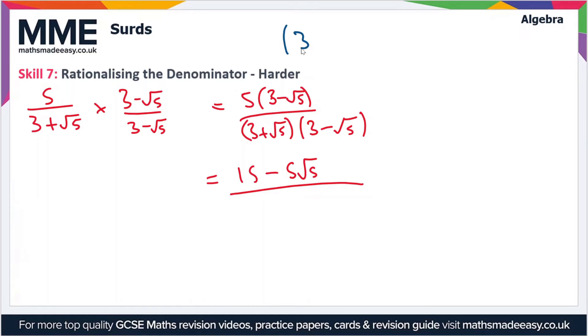So let's write up here. 3 plus root 5. 3 minus root 5. We'll do the expansion up here. So 3 times 3 gives us 9.